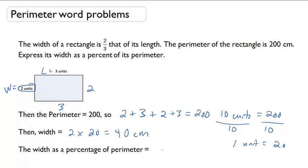And if we want to express the width as a percentage of the perimeter, forty divided by two hundred, and that's going to give us a percentage of twenty percent.